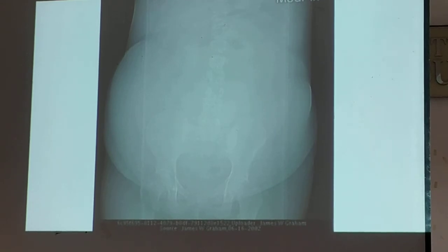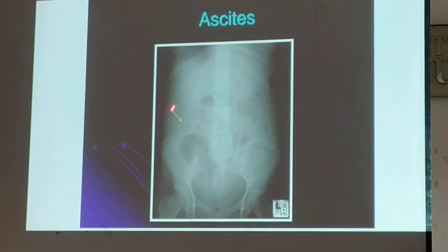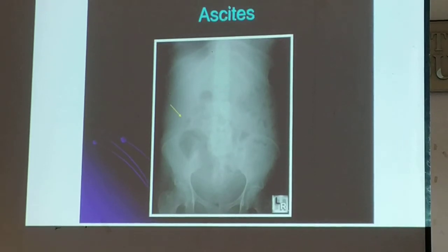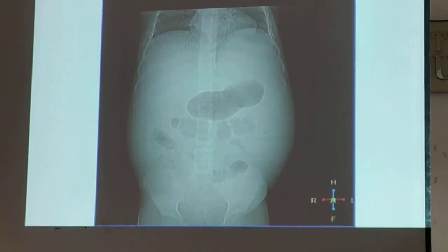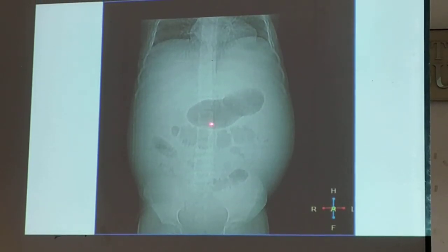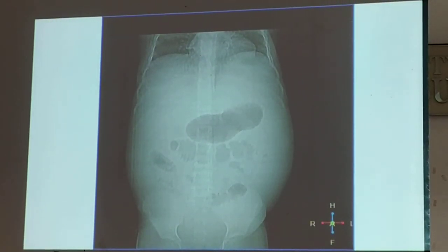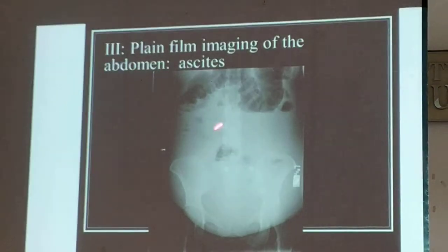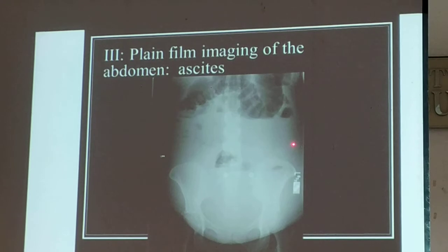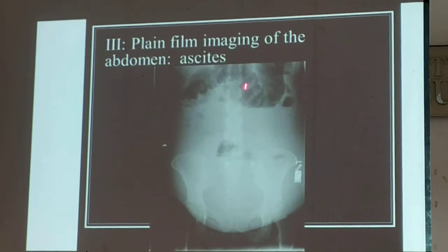Normally you have to drain ascites. The typical sign: the dilated bowel loops are seen at the center of the abdomen, and again the groundglass appearance. Another picture shows bulging flanks. This is also ascites — the typical groundglass appearance with the bowels floating.